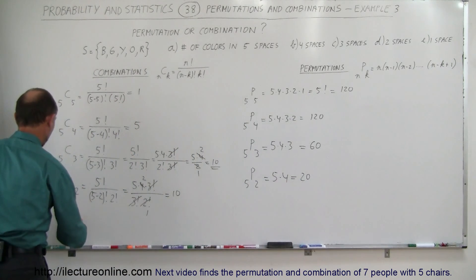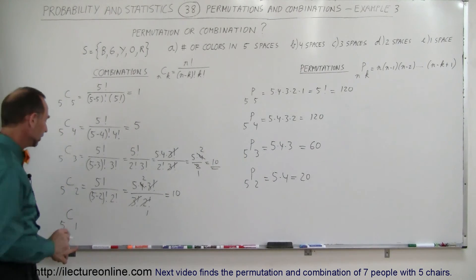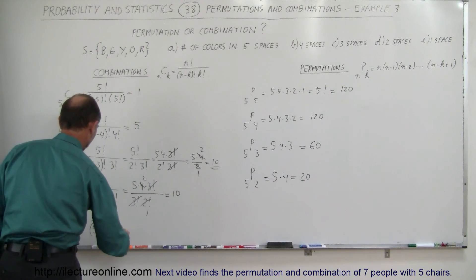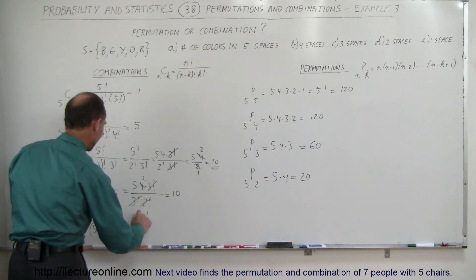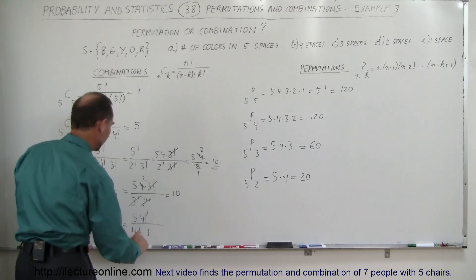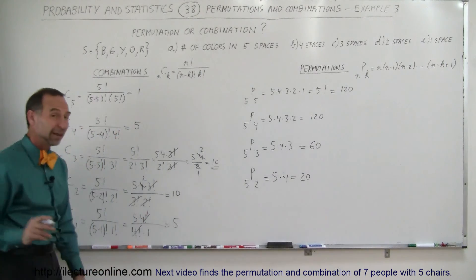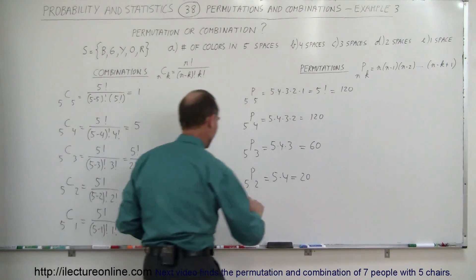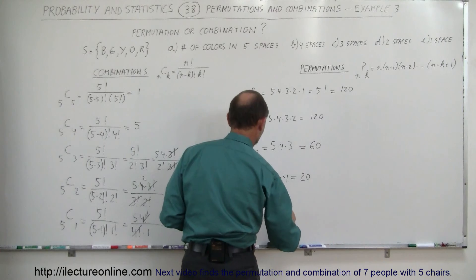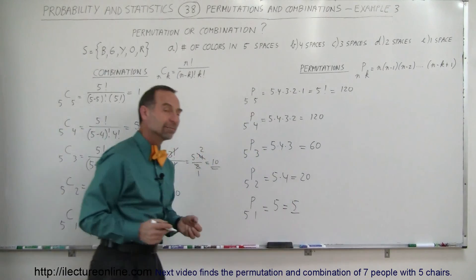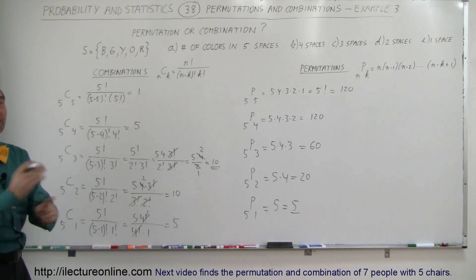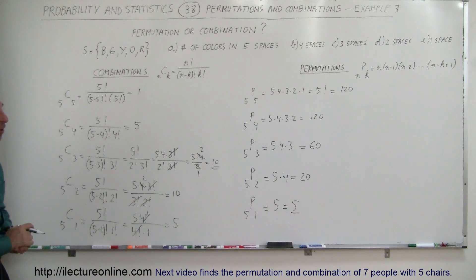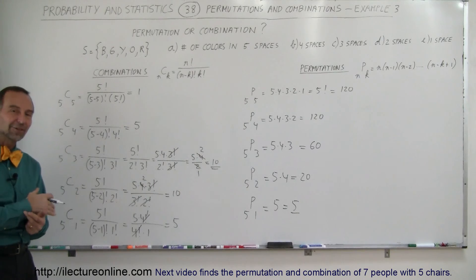Finally, for one space: the number of combinations C(5,1) equals five factorial divided by (five minus one) factorial times one factorial, which becomes five times four factorial divided by four factorial times one. The four factorials cancel, leaving simply five. With five colors and one space, you can put one color in at a time — five combinations. For permutations P(5,1), it's also just five, because there are only five ways to take five colors and put them in one space regardless of rearrangement. So the number of combinations and permutations are equal when there's only one space — which gives further insight into the difference between the two.